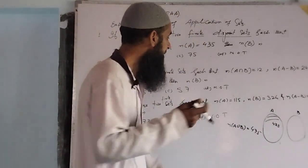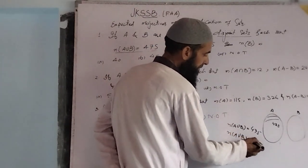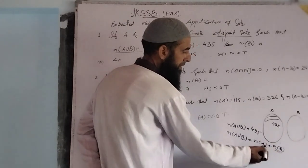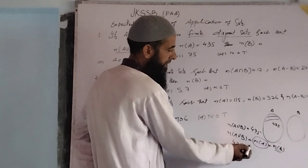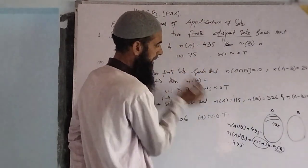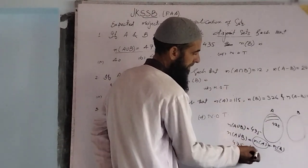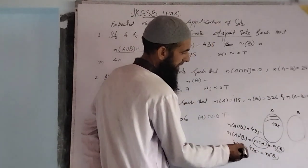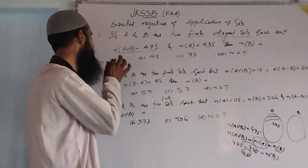Clearly, the number of elements in A∪B, if A and B are disjoint, is equal to number of elements in A plus number of elements in B. We have to find number of elements in B. So: n(A∪B) = 475, minus number of elements in A which is 435, equals number of elements in B. Five minus five is zero, seven minus three is four — so the answer is 40.